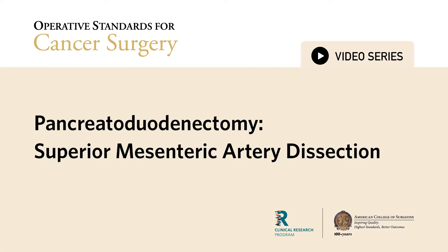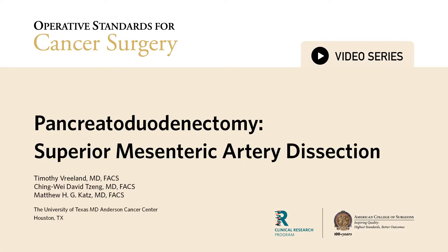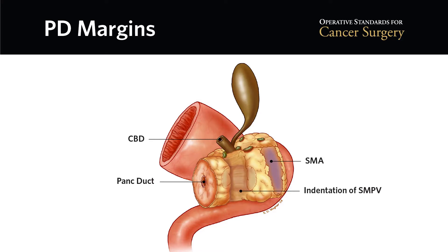In the following video, we will highlight the key steps to a safe and oncologically sound superior mesenteric artery dissection as part of the pancreatoduodenectomy. Patients who undergo pancreatoduodenectomy for adenocarcinoma and whose surgical margins are free of cancer live longer than those in whom macroscopic or microscopic disease is identified at any margin. This artist's rendition of the specimen removed by pancreatoduodenectomy depicts the three margins that should be examined by the pathologist per AJCC and CAP guidelines.